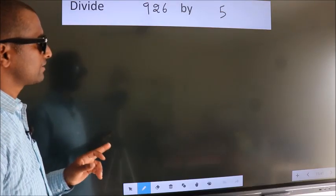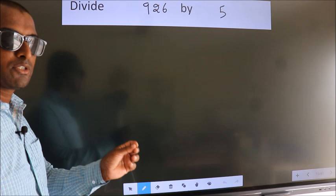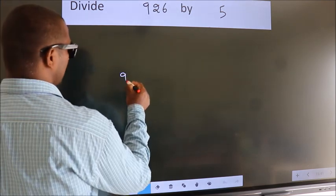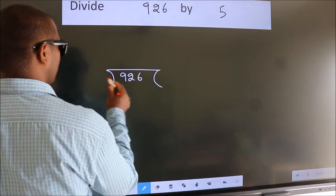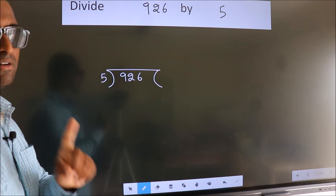Divide 926 by 5. To do this division, we should frame it in this way. 926 here, 5 here. This is your step 1.